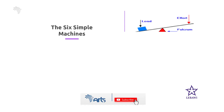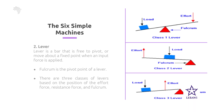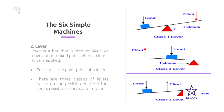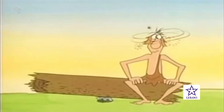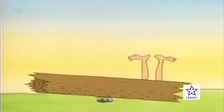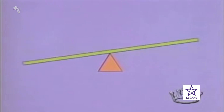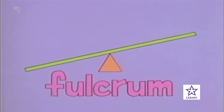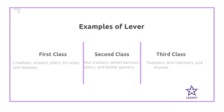The second type of simple machine is lever. A lever is a bar that is free to pivot or move about a fixed point when an input force is applied. There is a fulcrum, which is the pivot point of a lever. Depending on the position of the fulcrum, the load, or the effort, we can classify levers into three: class one lever, class two lever, and class three lever.